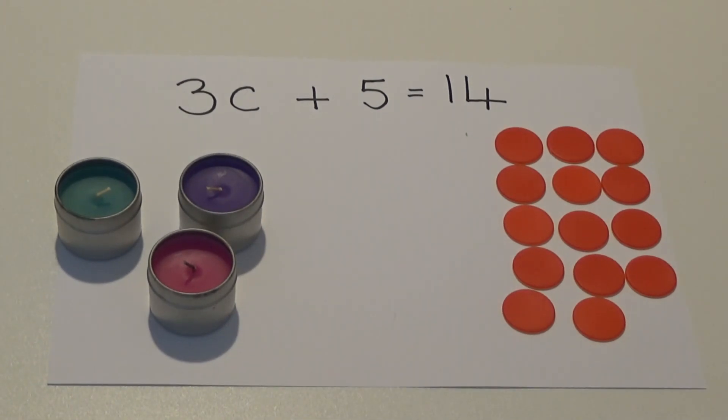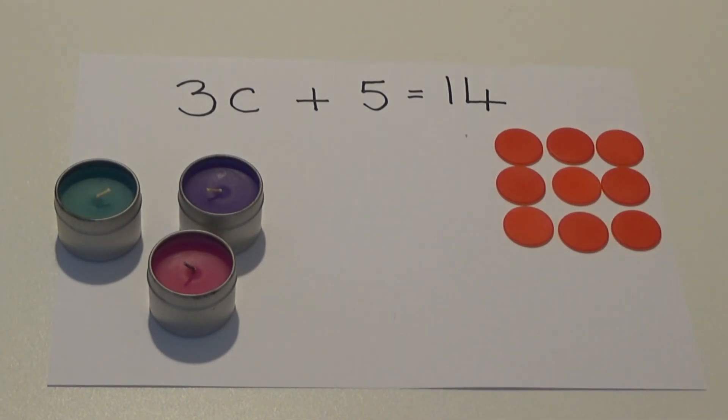Because we have done this, we also need to take 5 counters away on the other side to make sure both sides are still equal value. We can now see that the 3 candles on their own are equal to 9 counters.